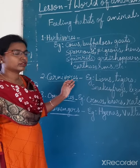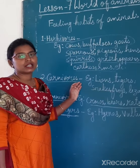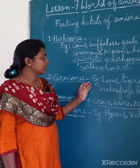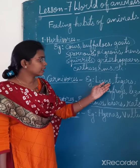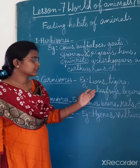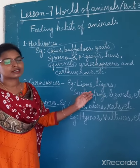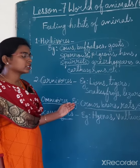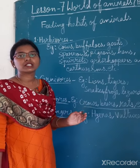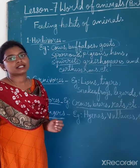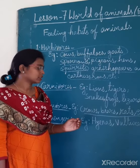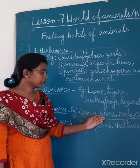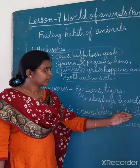Carnivorous animals are those animals who eat the flesh of other animals. Examples are lions, tigers, snakes, frogs, lizards, etc. Omnivorous are those animals who eat both plants as well as animals. Examples are crows, bears, rats, etc.